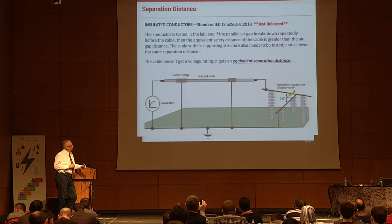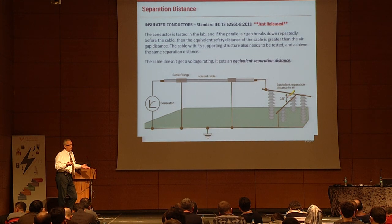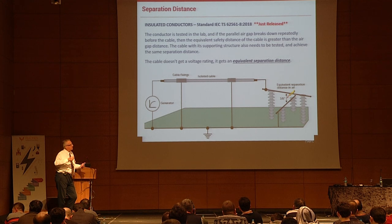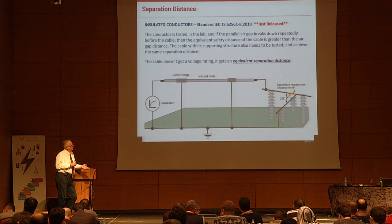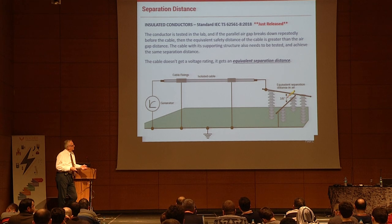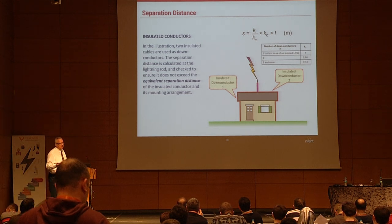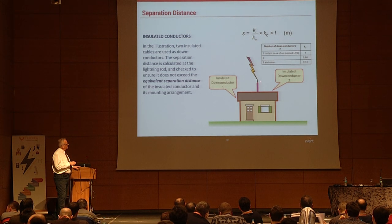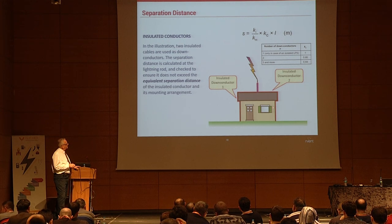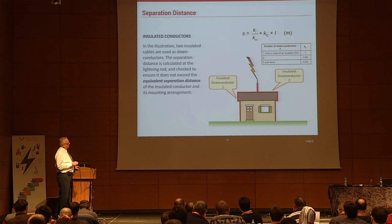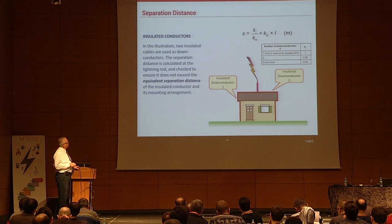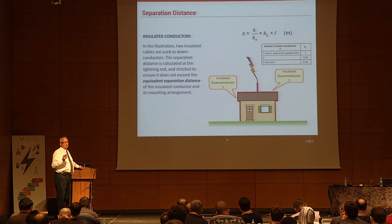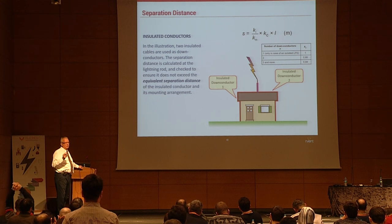By varying the distance — for example at half meter you get a cross flash at the cable, then increasing to 0.6 meters you get a cross flash at the rod, not the cable — that tells you the cable is good to half meter separation distance. The insulated cable can also be used in a structure where the current splits in two directions, applying the Kc factor for single or double conductors. The lab test gives you the separation distance for the insulated cable as well.